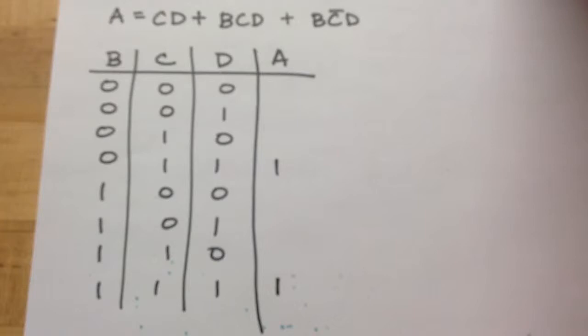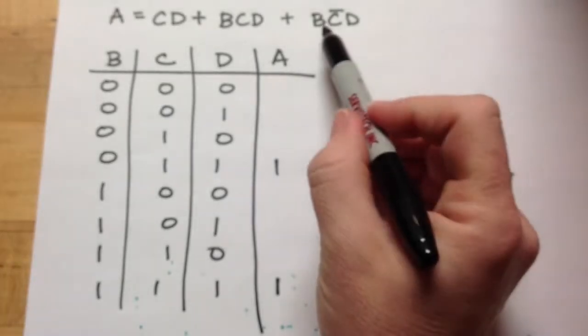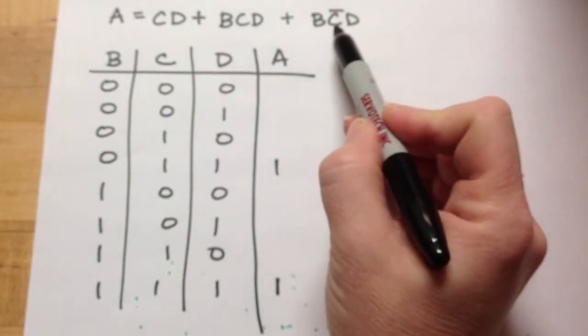Well, I already got BCD. Here it is. 1, B, C, D. But it's already marked. And then I need B, not CD.